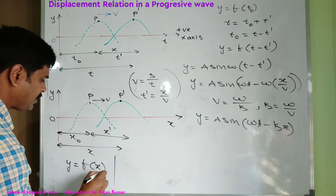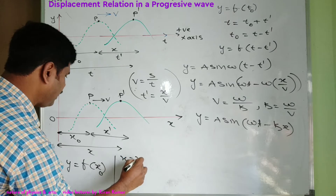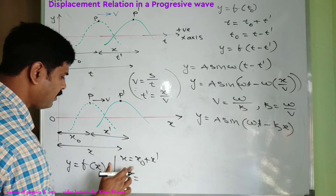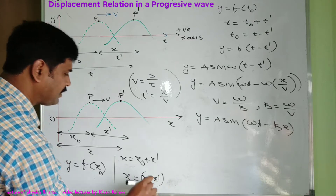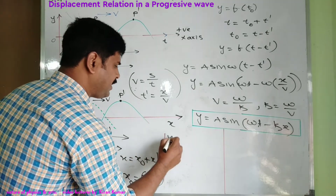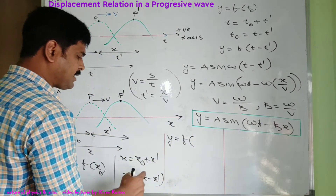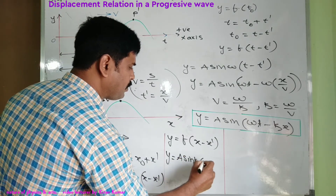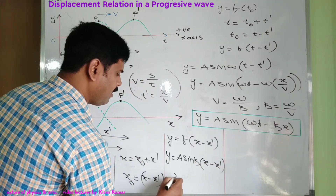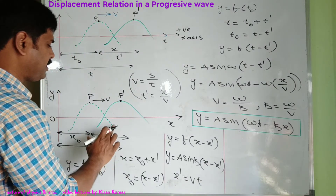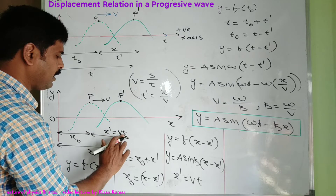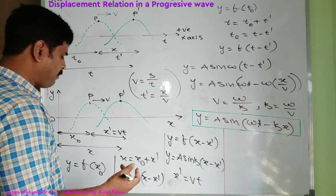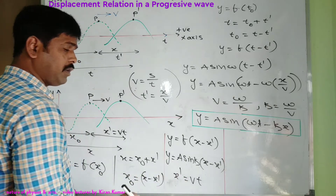The time is taken as x-naught. Then x equals x-naught plus x-dash, and x-naught equals x minus x-dash. So displacement y is a function of x-naught, and since x-naught equals x minus x-dash, y equals a sin(k(x − x-dash)).